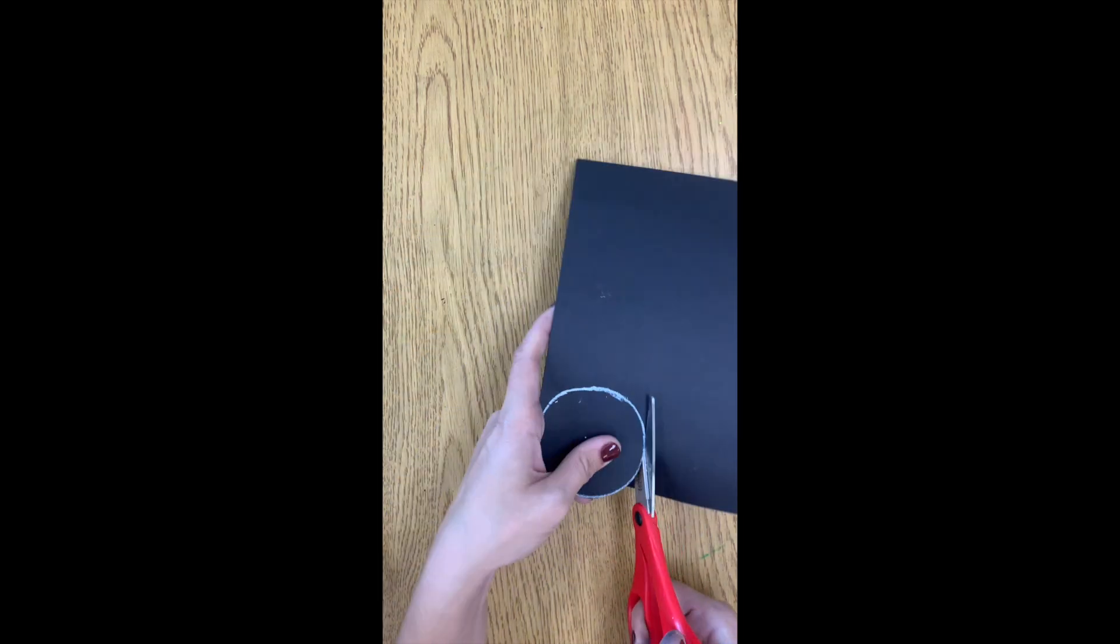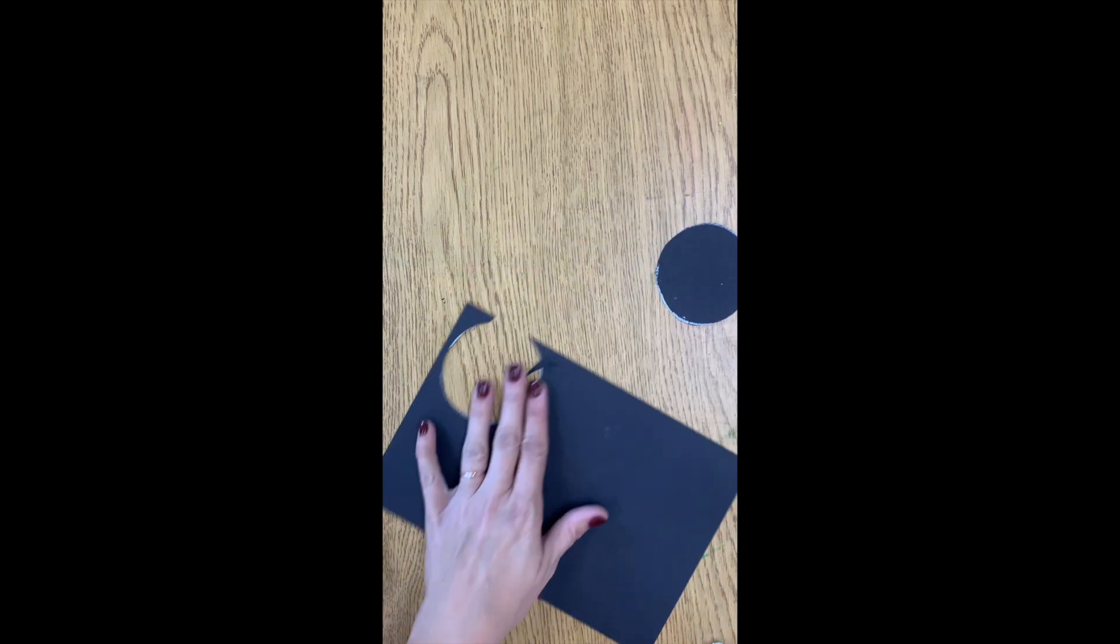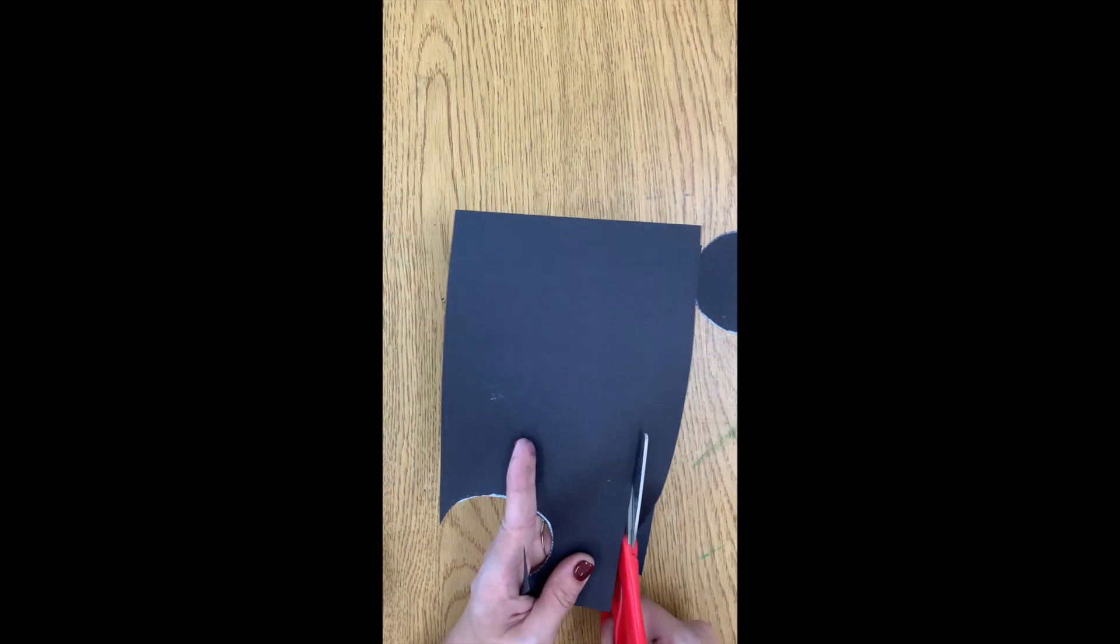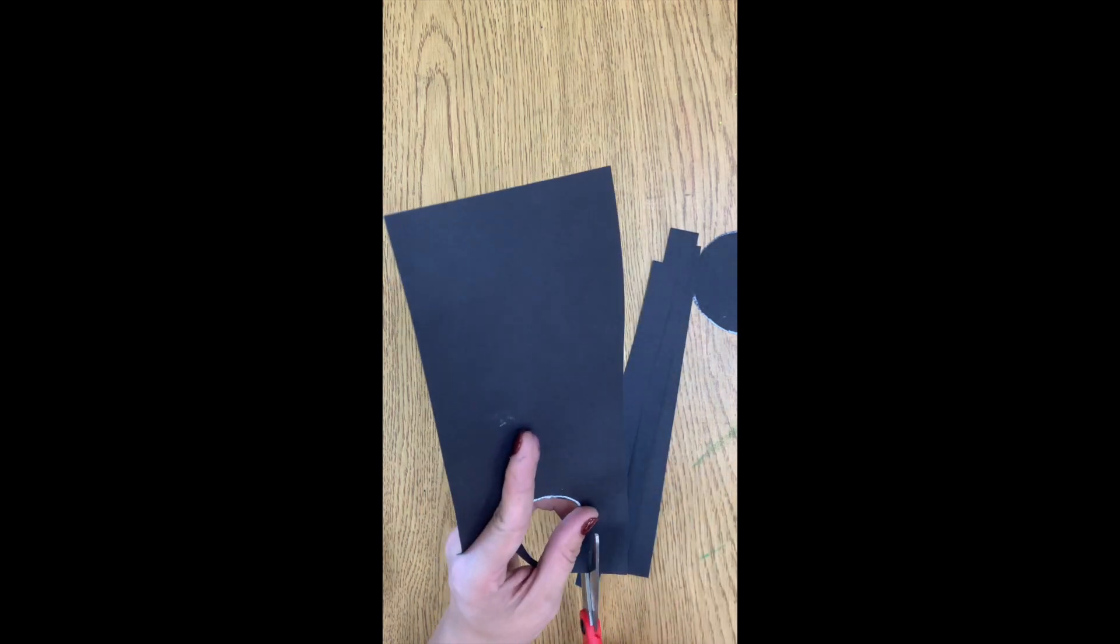Then cut out the body of your spider carefully using scissors. Next, I am cutting out 4 legs. I am using the other side of my paper and cutting all the way to the top.